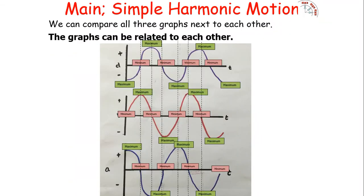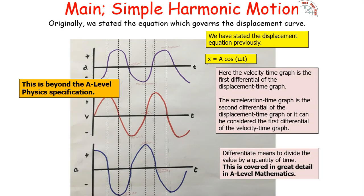We can link all three graphs next to each other. The displacement and acceleration graphs have the same shape, except they're flipped in terms of positive and negative because acceleration and displacement act in opposite directions. The velocity-time graph is shifted by a quarter of a cycle from each of the others — one is a sine curve and one is a cosine curve.